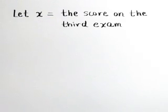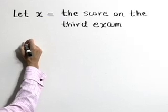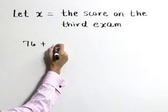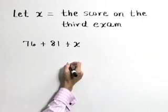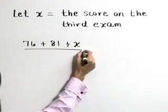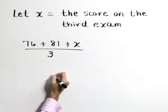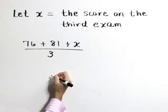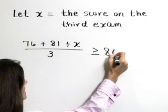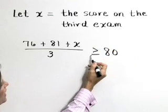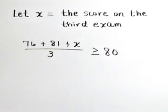We know that Shania wants at least an average of 80 after the third exam. So as we average her exam scores, her first score was a 76, her second score was an 81. We've let X represent her third score, and we'll take this average by adding those scores and dividing by three — the number of scores. She wants this average to be at least 80, meaning greater than or equal to 80.